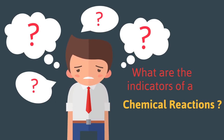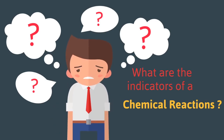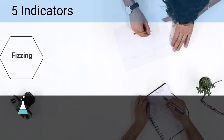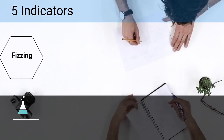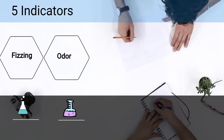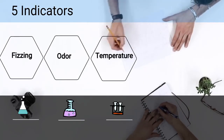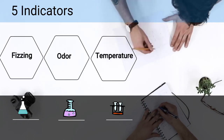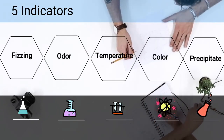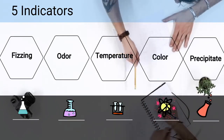There are at least 5. They are: fizzing or bubbles, a change in odor, a change in temperature, a permanent change in color, or a precipitate being created.